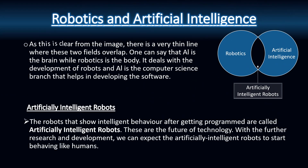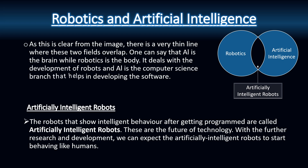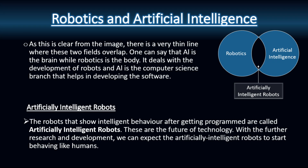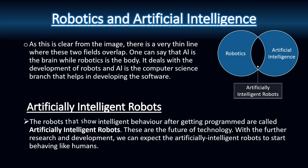One usually gets confused between robotics and artificial intelligence. From this image, it is clear that there is a very thin line where these two fields overlap. The difference is that robotics deals with the development of robots, while AI is the branch of computer science that helps in developing software. Robots that show intelligent behaviour after being programmed are called artificially intelligent robots.